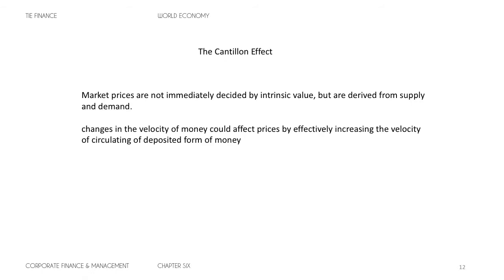So supply and demand determine the price of the product. He also considers something very important: the velocity of money. The velocity of money is basically the quantity of exchanges made within a specific amount of time — how many times one dollar exchanges within a time frame. Increases in the money supply, bank notes, or fiat currency could affect prices by effectively increasing the velocity of the deposited currency.